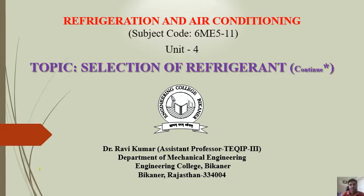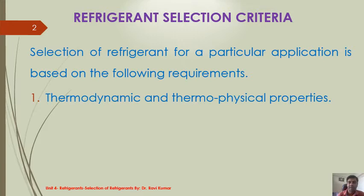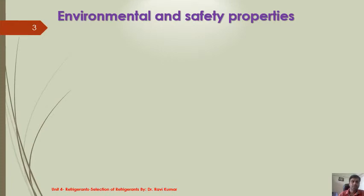Today I will continue my last topic, that is selection of refrigerants. In the last lecture, we discussed the thermodynamic and thermophysical properties. Today we will discuss the second one, that is environmental and safety properties, and the third one is economics. The environmental and safety properties are observed to be the main deciding factor for whether a refrigerant can be used or not.